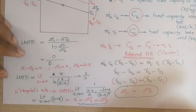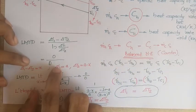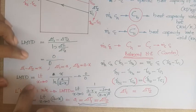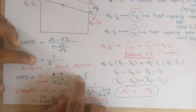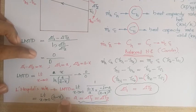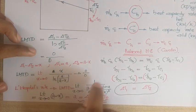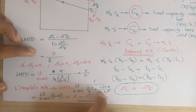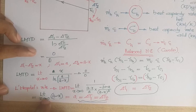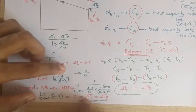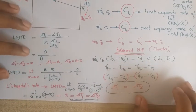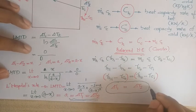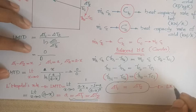To find the LMTD, we treat (ΔT1 − ΔT2) as a variable X approaching 0. Setting ΔT1 = A and ΔT2 = A − X, the expression becomes X / ln(A / (A − X)), still a 0/0 form. Applying L'Hôpital's rule and taking the limit as X → 0 gives A − X → A. Therefore, LMTD = A = ΔT1 = ΔT2.